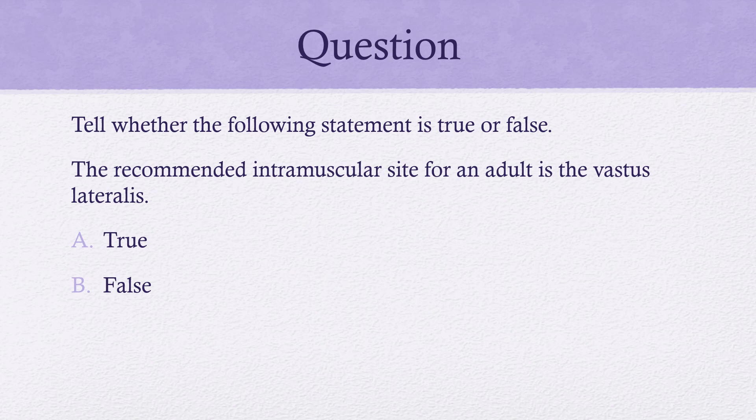Here's a question: is it true or false that the recommended intramuscular site for an adult is the vastus lateralis? The answer is false — the recommended intramuscular site for an adult is the ventrogluteal or even the deltoid.